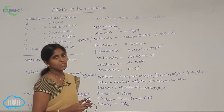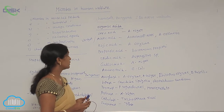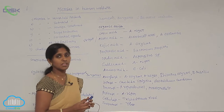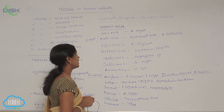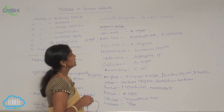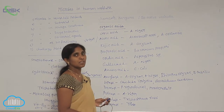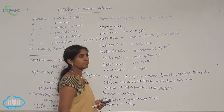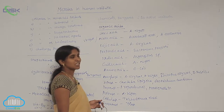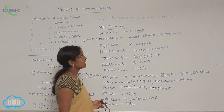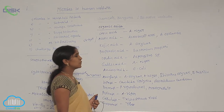Next is vinegar, which is used as a cleaning agent and also as a flavor agent. Vinegar is also called acetic acid, and this acetic acid is obtained from cultures of Acetobacter aceti and Acetobacter orientis.